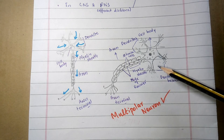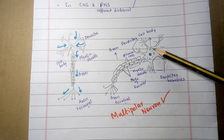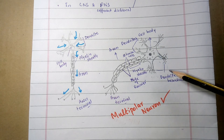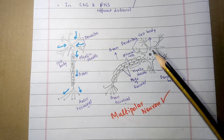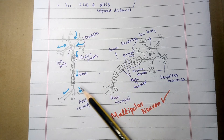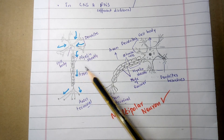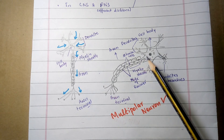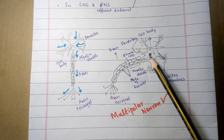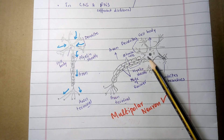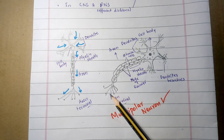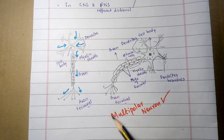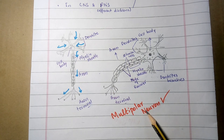The dendrites are extensions of the cell body that receive the impulses, and the axon is also a process or neurite — an extension of the cell body — that takes the impulses and sends them to the CNS, the central nervous system. This is the diagram of the multipolar neuron, showing all the structures present in it.